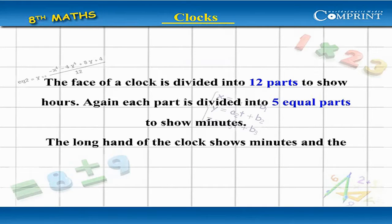The face of a clock is divided into 12 parts to show hours. Again, each part is divided into 5 equal parts to show minutes.